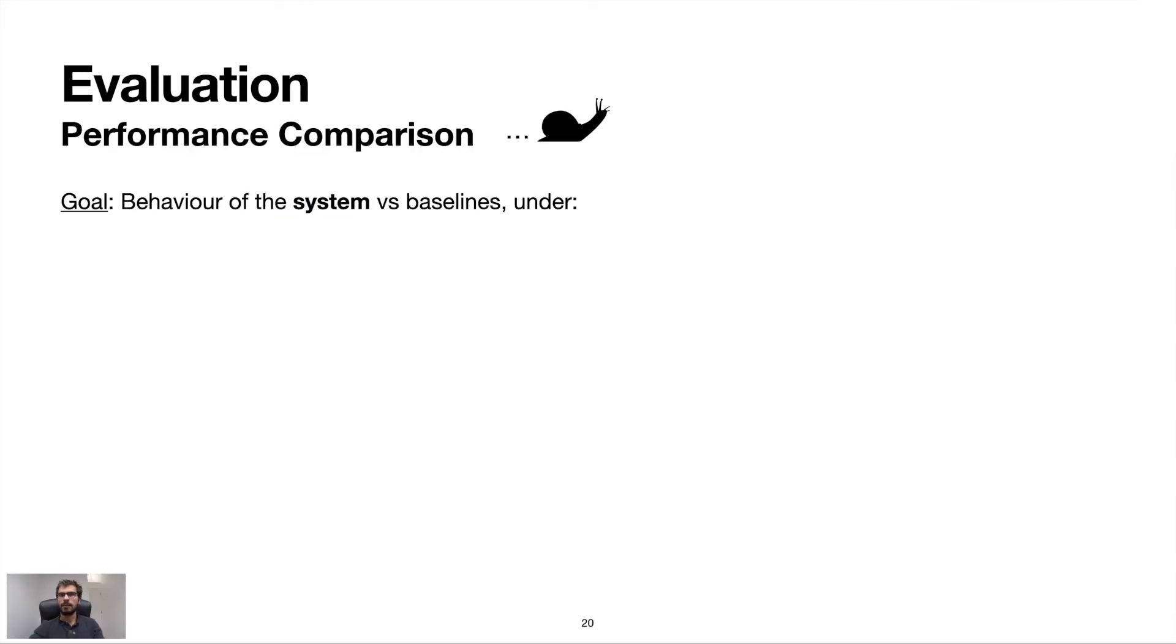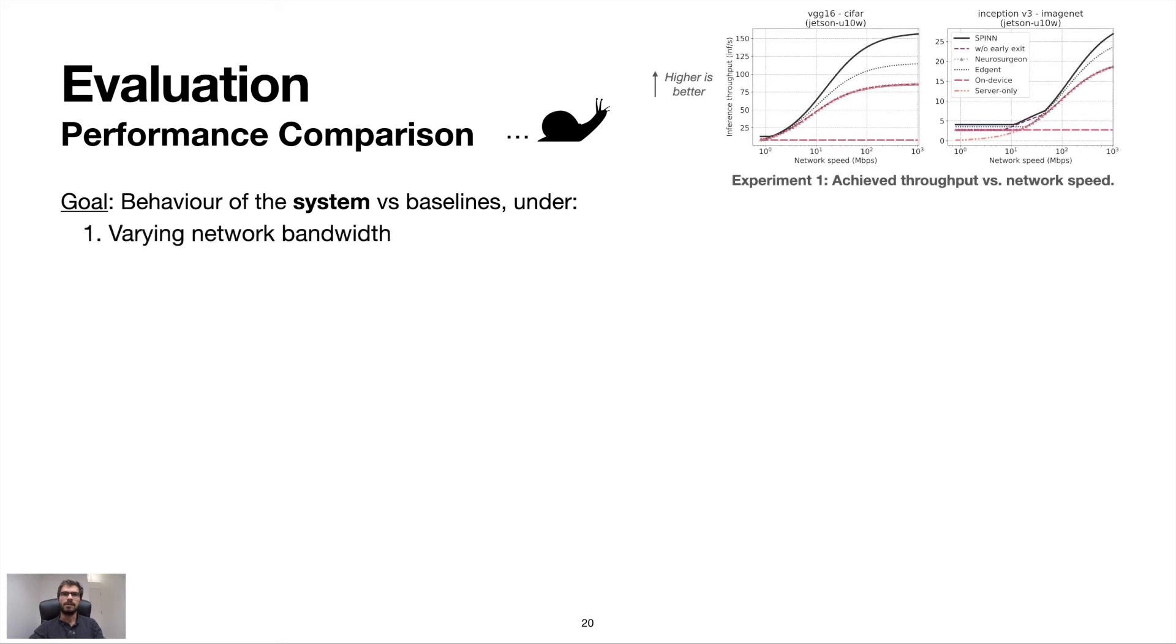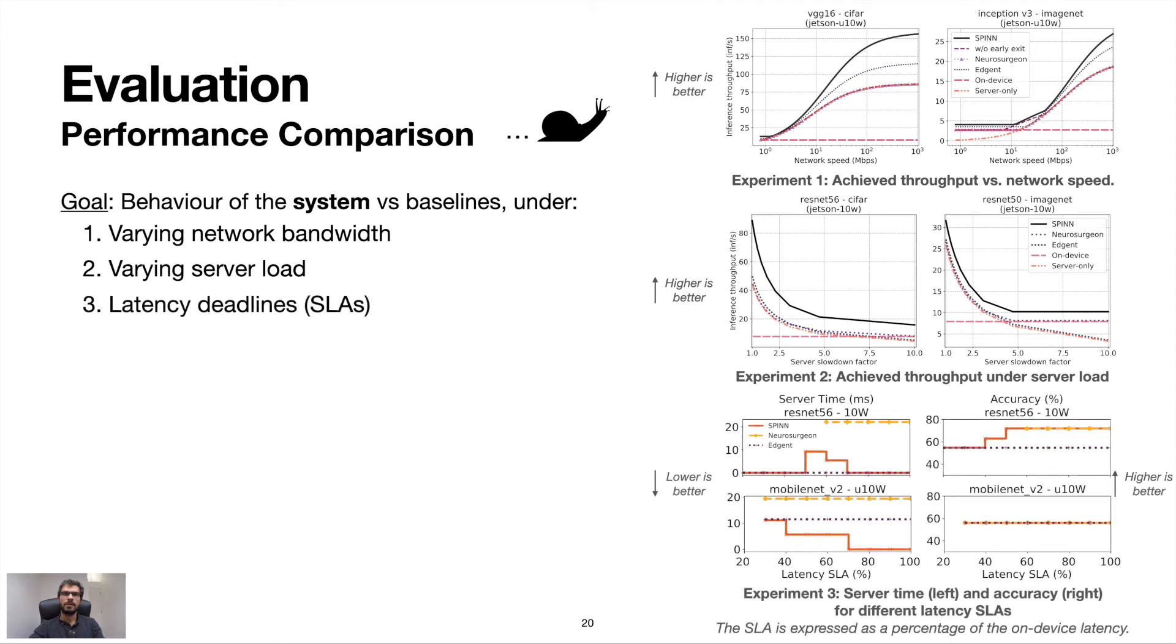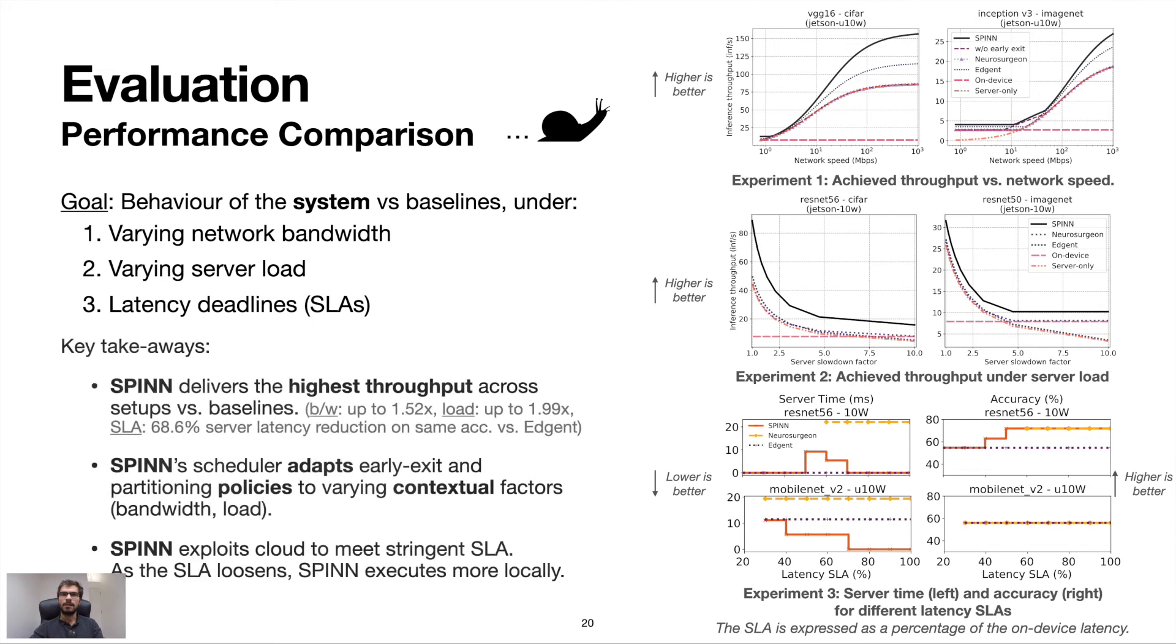First, we evaluated the throughput of our system under varying conditions, such as the available network bandwidth and server load, as well as under user-defined SLAs. The first two experiments plot the inference throughput as a function of the varying network bandwidth and server load for different DNNs and energy profiles, while the last experiment shows the server time and achieved accuracy for varying SLAs. Please note that the SLA is shown as a percentage of the on-device inference latency. The key takeaways are that spin is able to consistently beat the baselines, even under tough latency deadlines, and adapt its policies to varying contextual factors without sacrificing accuracy. Simultaneously, it manages to save on server computation, as easier examples do not need to propagate to the full extent of the network. In comparison, Neurosurgeon's lack of an accuracy-latency trade-off mechanism and Agent's server-initiated inference nature, as well as the unnormalized cost function it uses, lead to suboptimal performance.